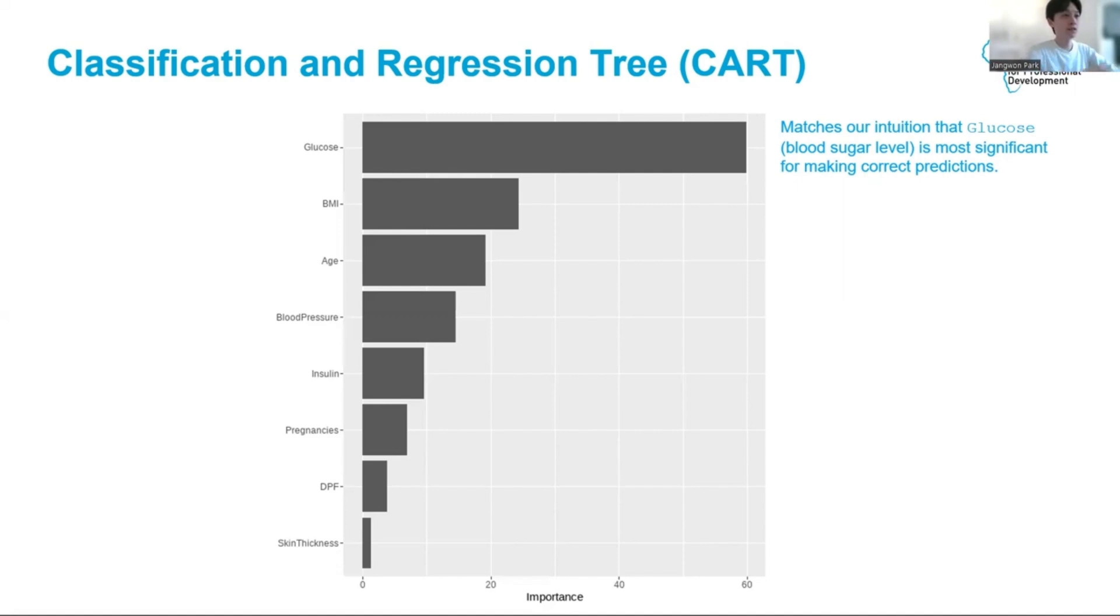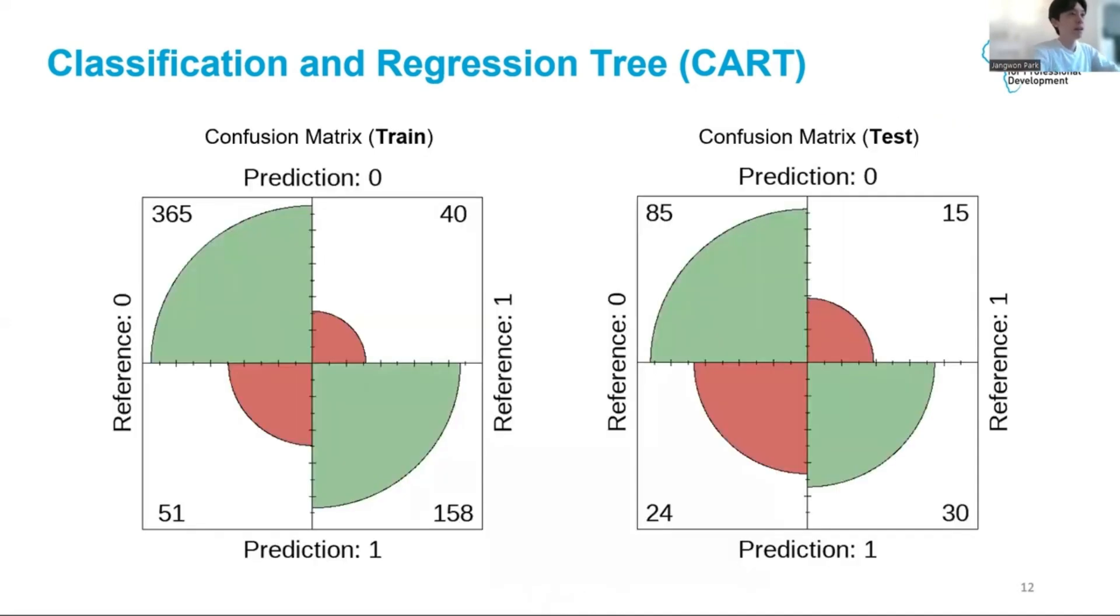As we already guessed from the correlation plot earlier, this matches our initial intuition that glucose is the most significant for making correct predictions. In general, it's a good strategy to be in touch with these kinds of intuitions as you're doing machine learning to make sense of whether you're doing a correct job. If something is counterintuitive though, that could also be very good since it might lead us to new and surprising insights.